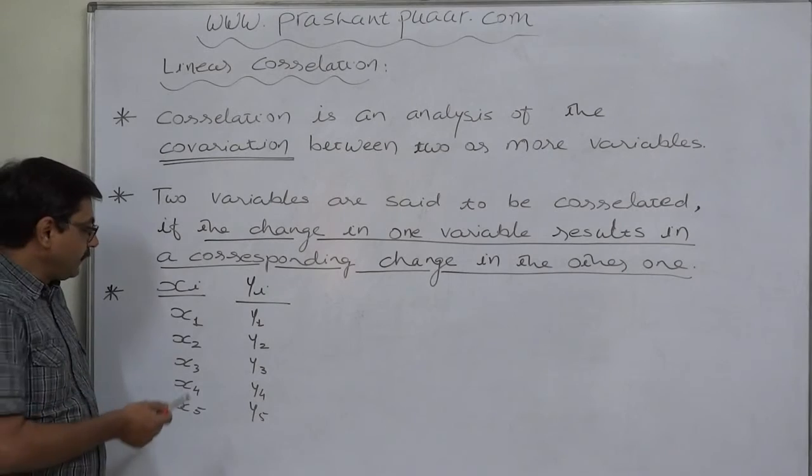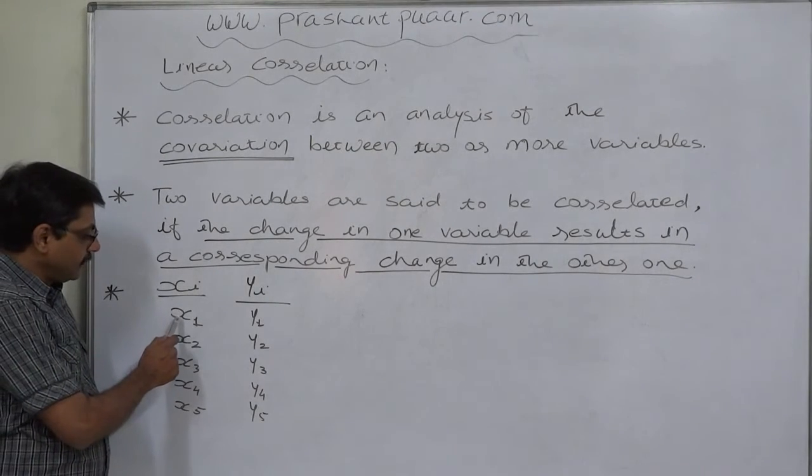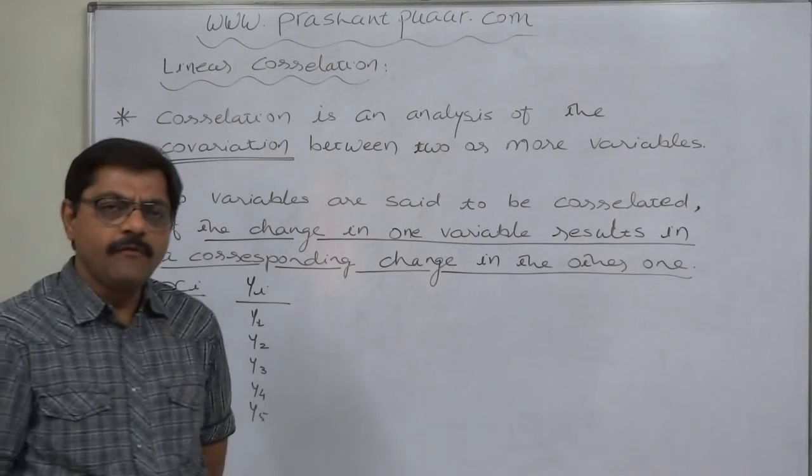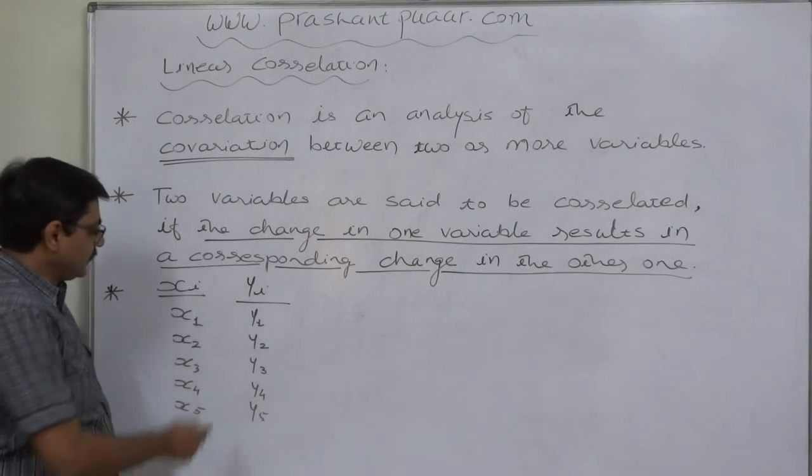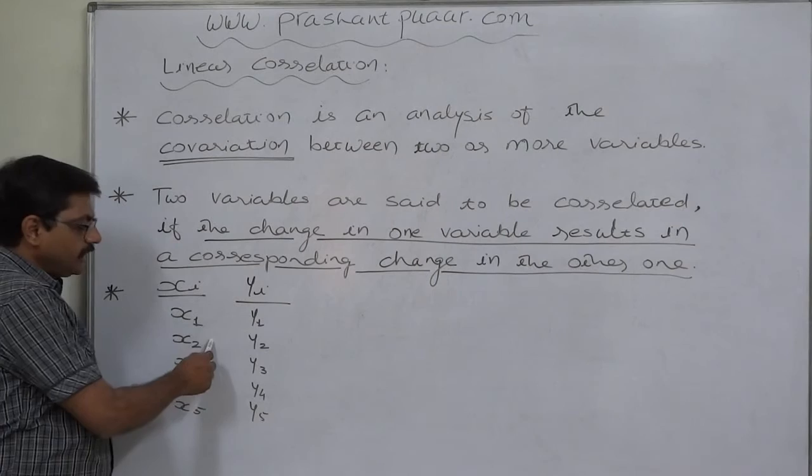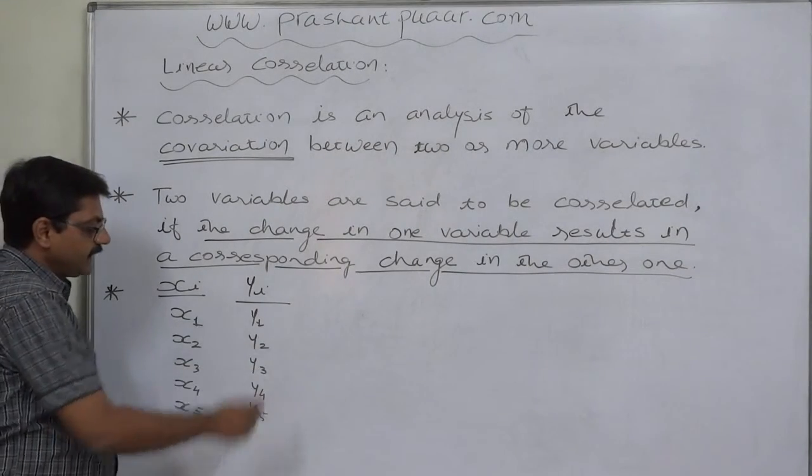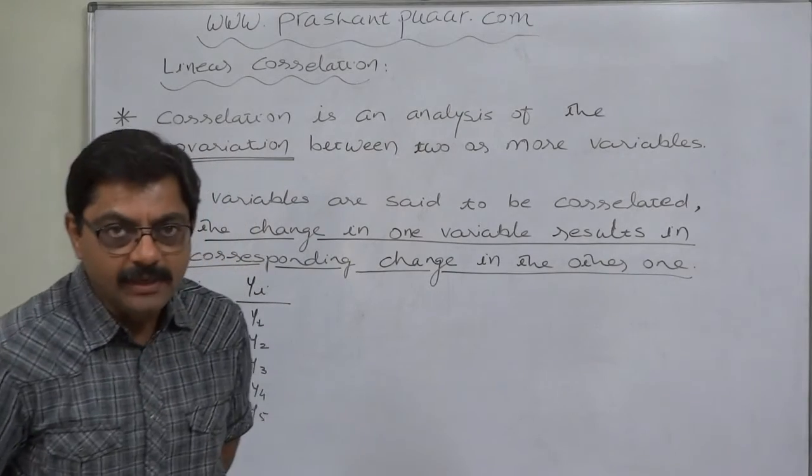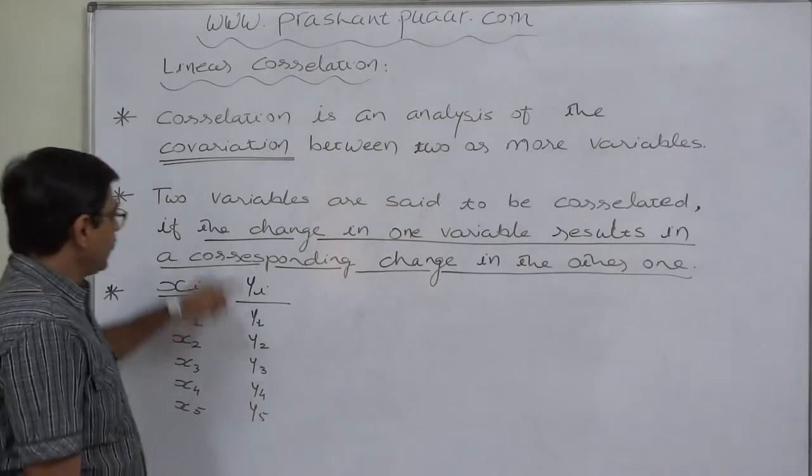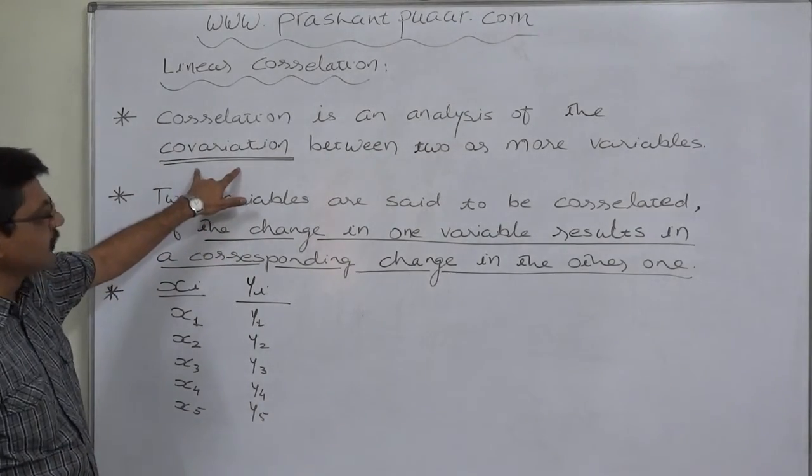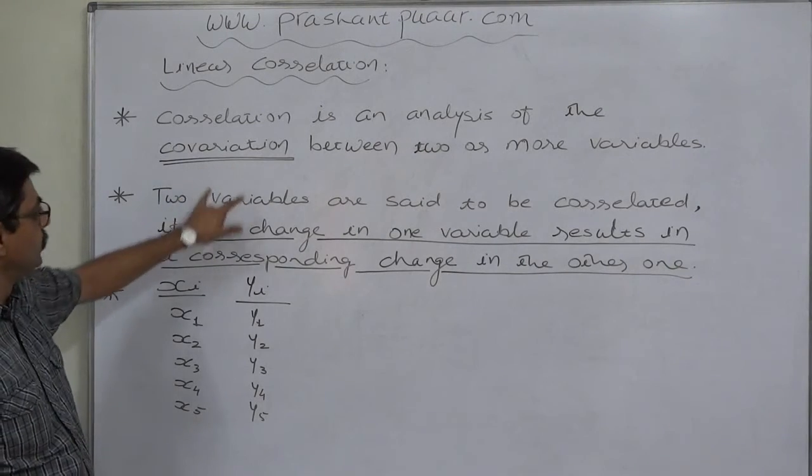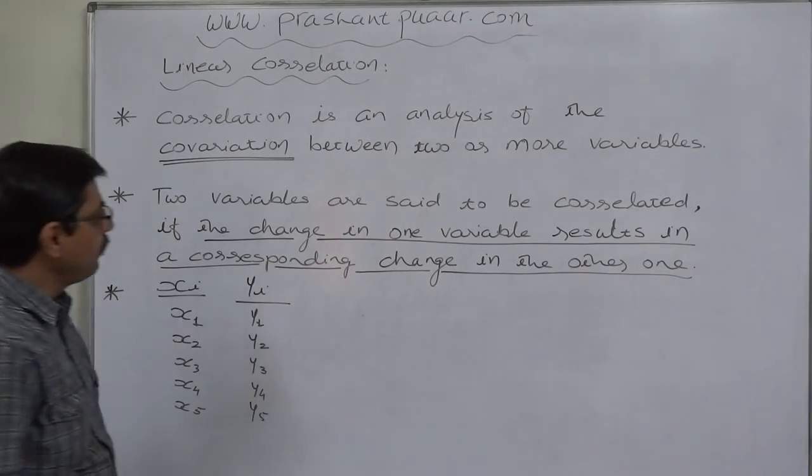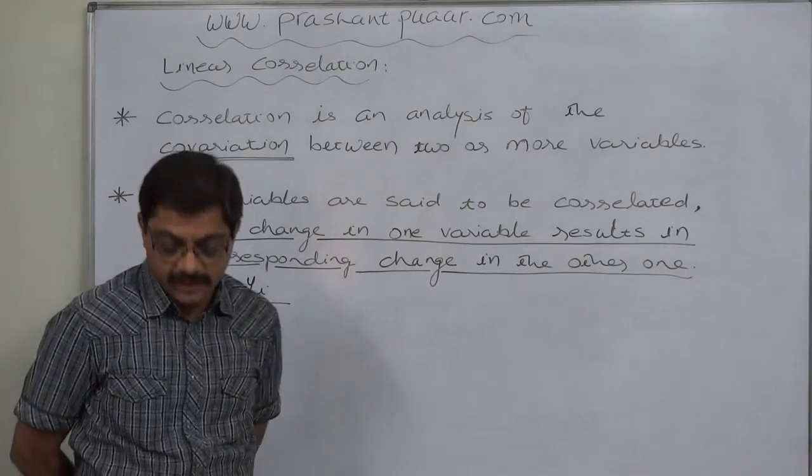For example, say at one point of time variable x takes value x1 and variable y takes value y1. Now for whatever reason the variable x takes value x2 and variable y takes value y2. If this is happening simultaneously, we recognize that type of behavior as covariation. So correlation is an analysis of the covariation between two or more variables.